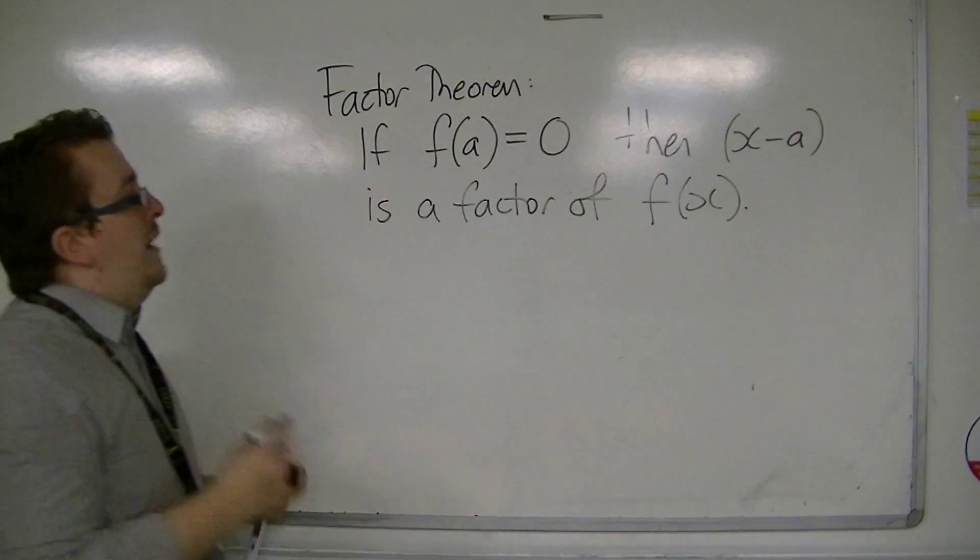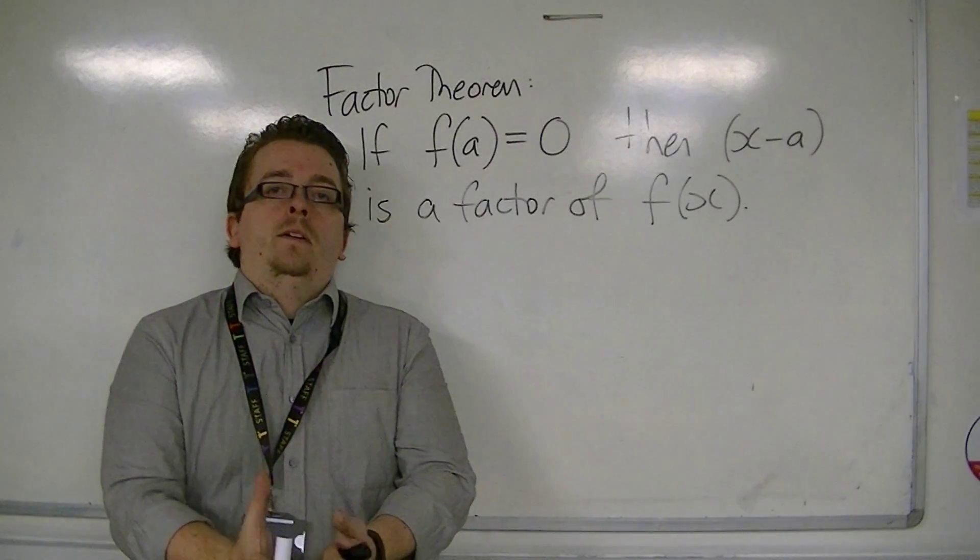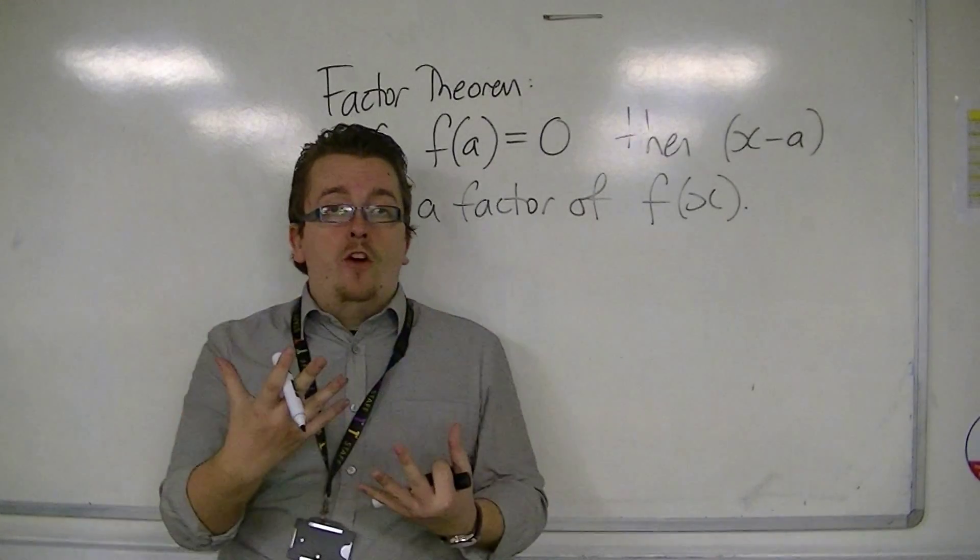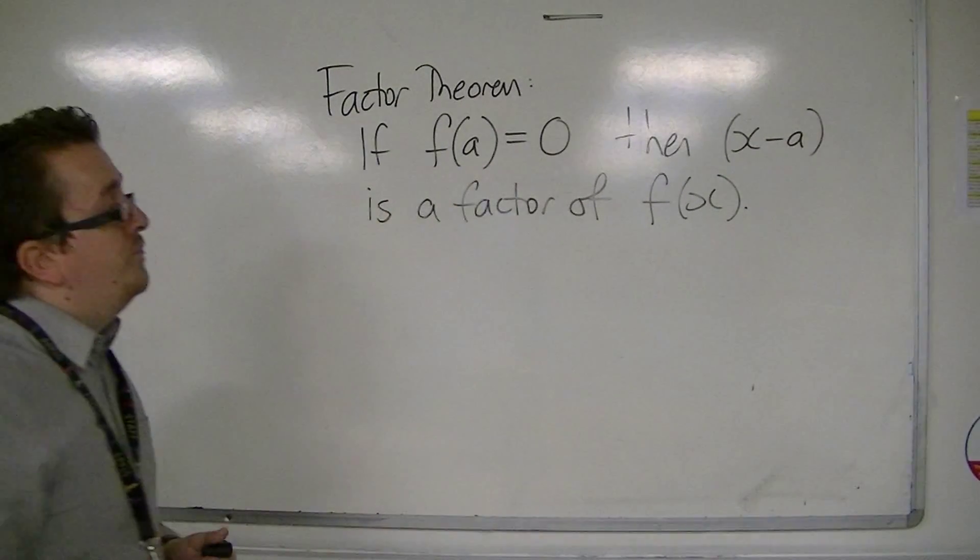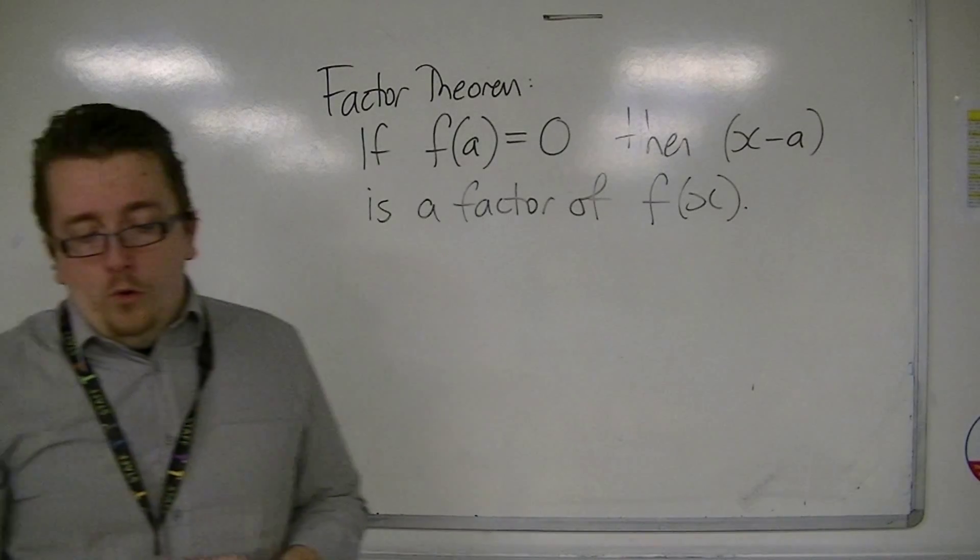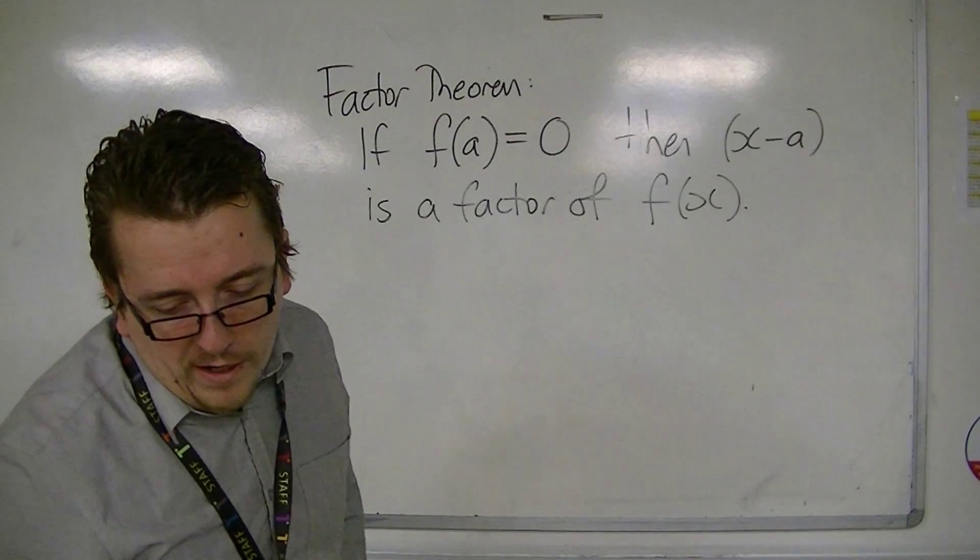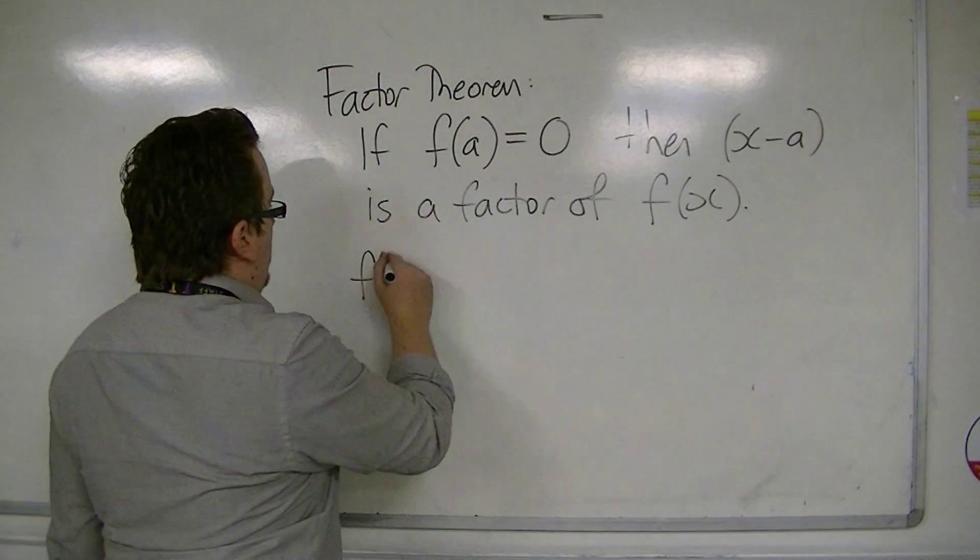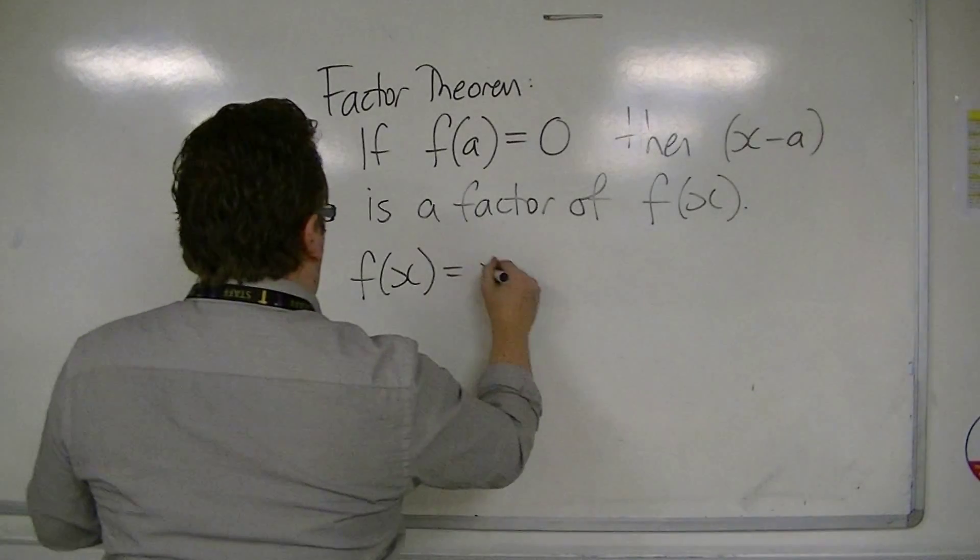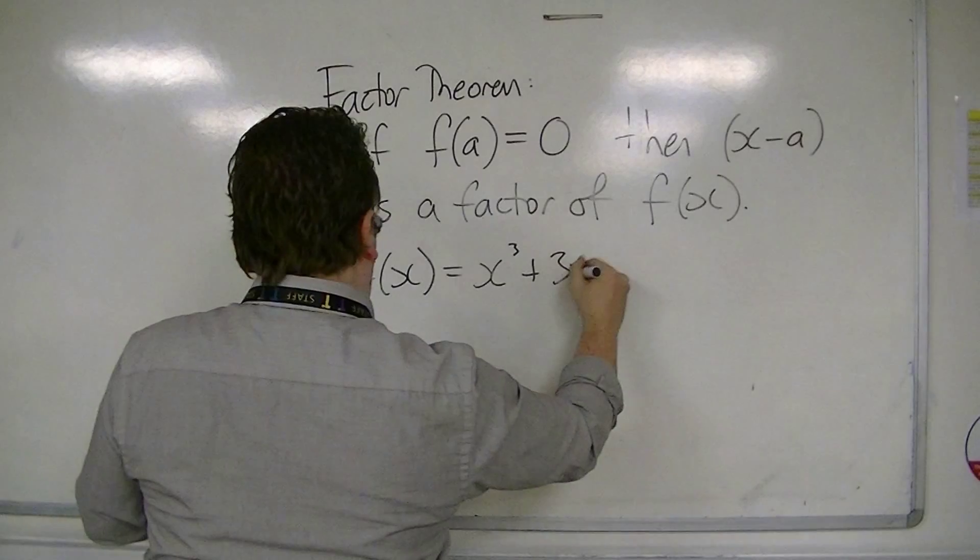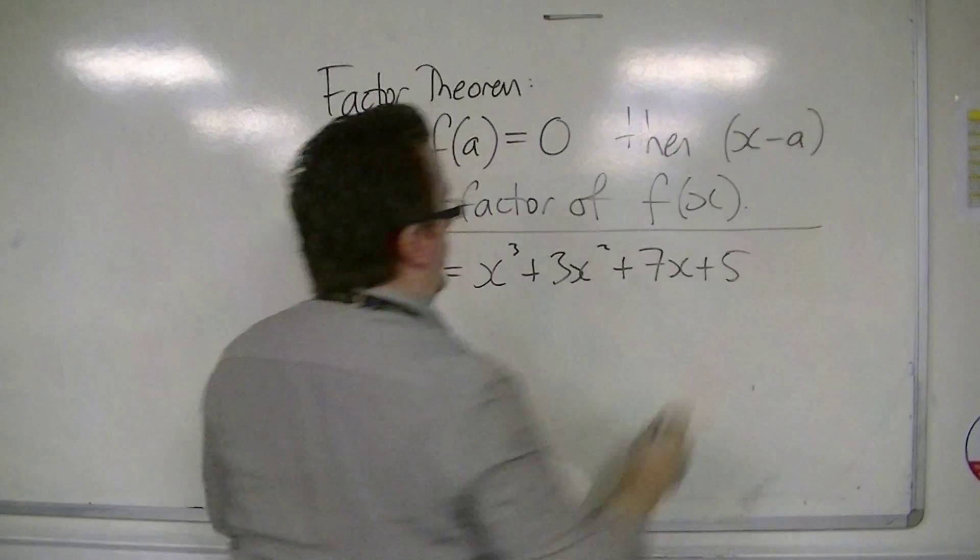So that would mean that we can find a factor of a polynomial by substituting in a and getting 0. For example, let's say we had a function f of x equals x cubed plus 3x squared plus 7x plus 5.